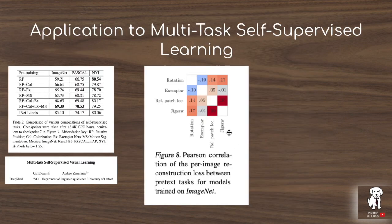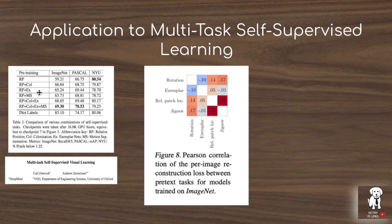Another interesting detail is the correlation of per-image reconstruction losses between different pretext tasks. There is high correlation between relative patch location and the jigsaw task, and low correlation between exemplar and rotation, showing how this visualization matrix might indicate which pretext tasks to combine for multitask self-supervised learning. The multitask self-supervised learning paper finds gains by combining pre-training tasks — rotation prediction, colorization, exemplar, and motion segmentation — and this lens output visualization can help identify the best combinations for learning representations from unlabeled data.